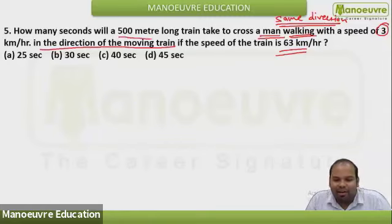How many seconds will a 500 meter long train take to cross a man walking with a speed of 3 km per hour in the direction of the moving train? In the direction of the moving train, that means they both are moving in the same direction.